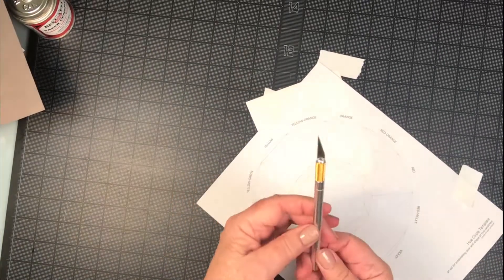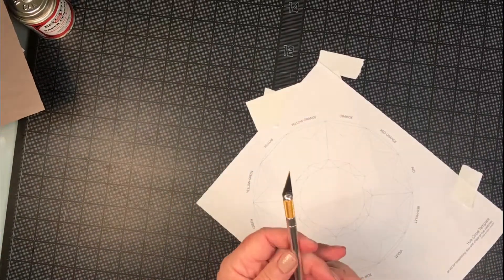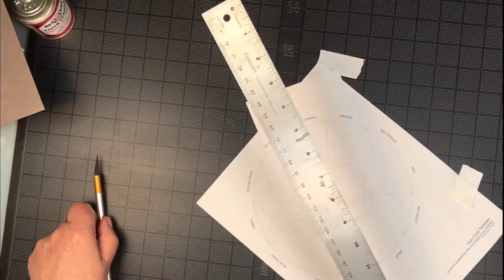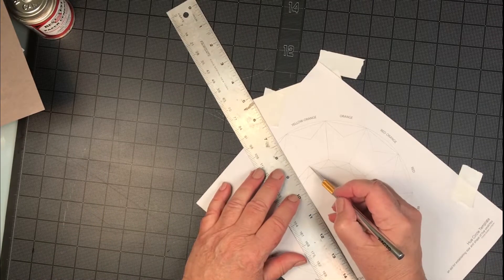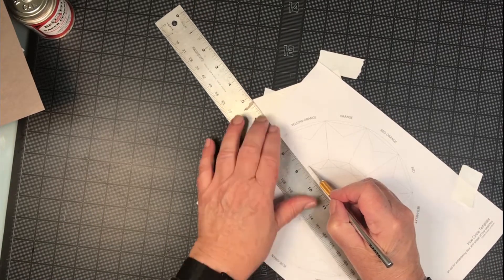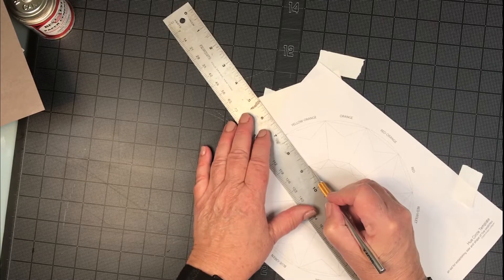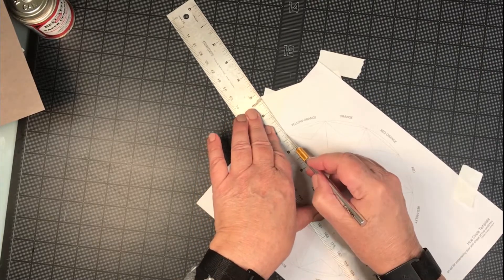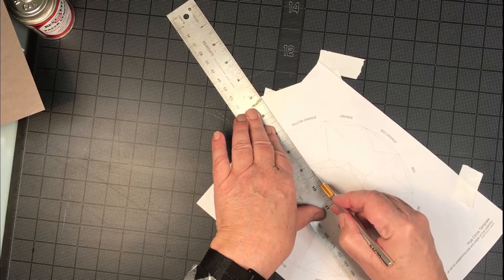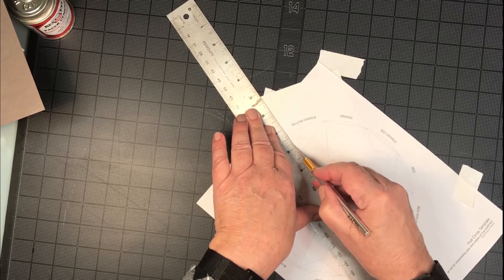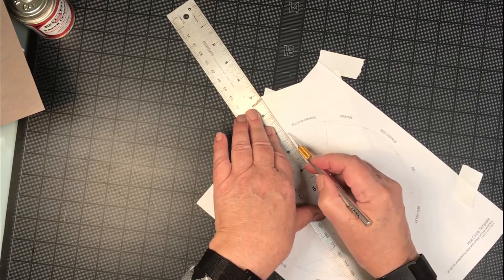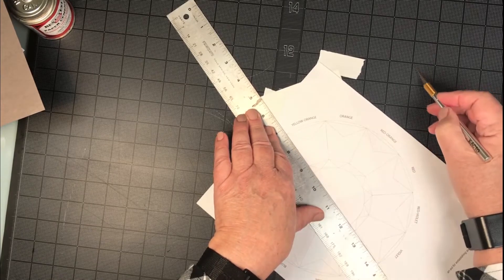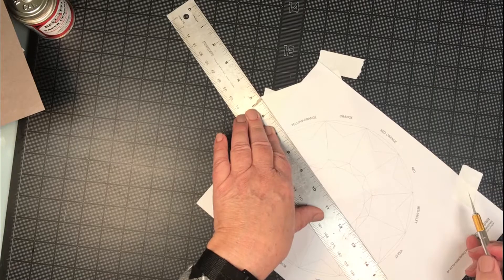Come in with an X-Acto blade, sharp blade, and a cutting edge. To cut accurately, place the blade first. And because this is Bristol and thick, take a couple passes until you feel the blade actually cut through and get into the smoothness of your cutting mat.